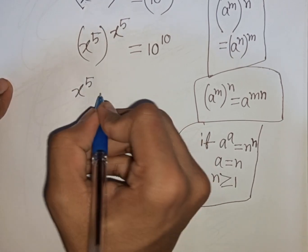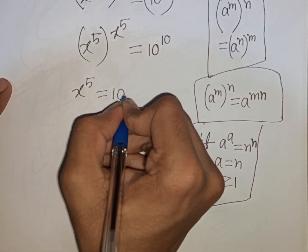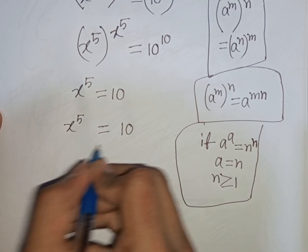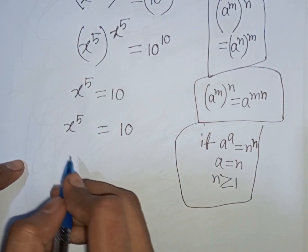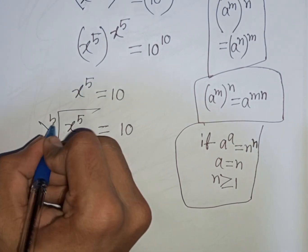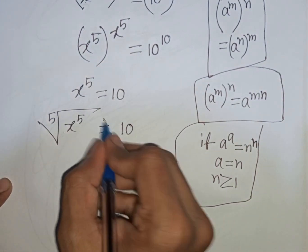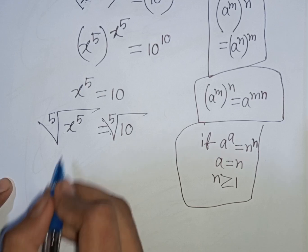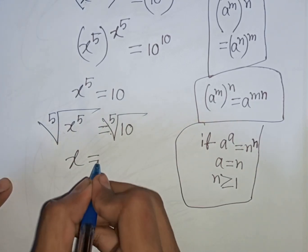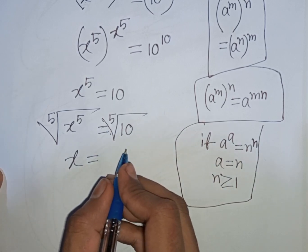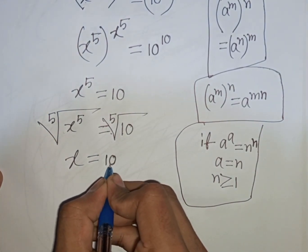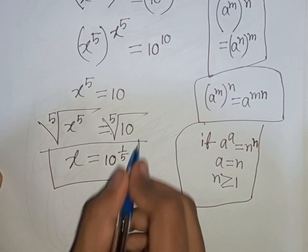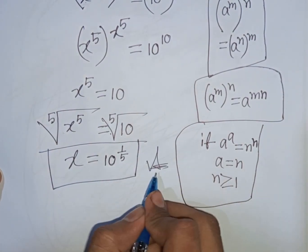So comparing, x power 5 will be equal to 10. Now we have x power 5 is equal to 10. We need the value of x, so we apply the fifth root to both sides. Fifth root of x to the power 5 equals fifth root of 10. This power 5 will be cancelled, so x is equal to the fifth root of 10, which is the same as 10 power of 1 by 5. This is our final answer.